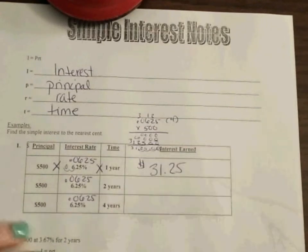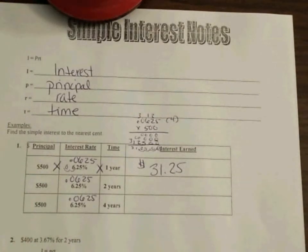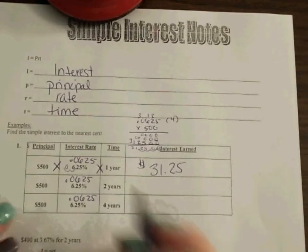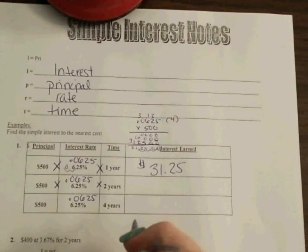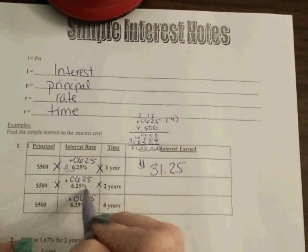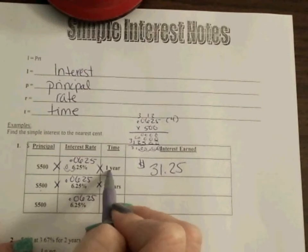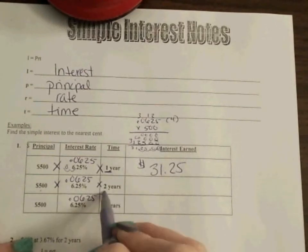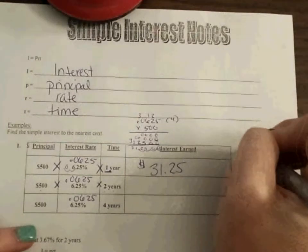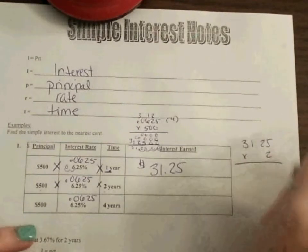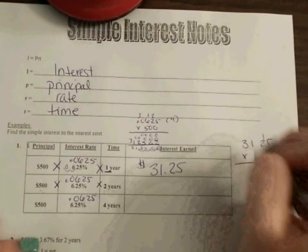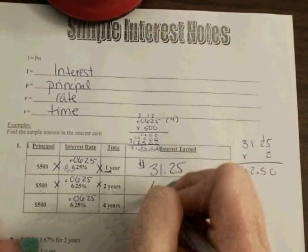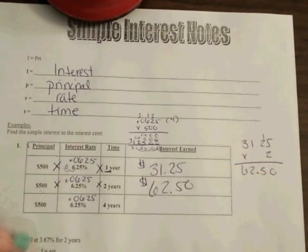So now I'm going to do the same thing over here at the second one. I'm going to take my 500, multiply by my 0.0625, and times two. Now, there are lots of ways that you can do this. One way for sure, because we are at the same rate, if I'm going from one year, and if this is what it's at for one year, for two years, I can take a shortcut, and I can actually come over here and do 31.25 times two, because my rate is consistent, and it doesn't change from year to year. So in two decimal places, I get $62.50 for my second year.